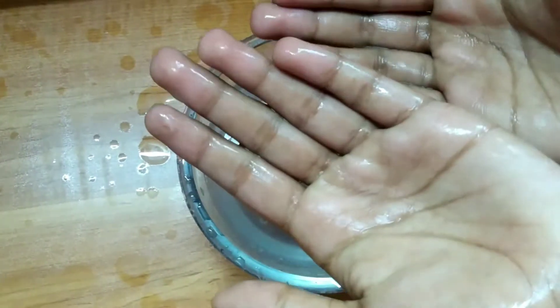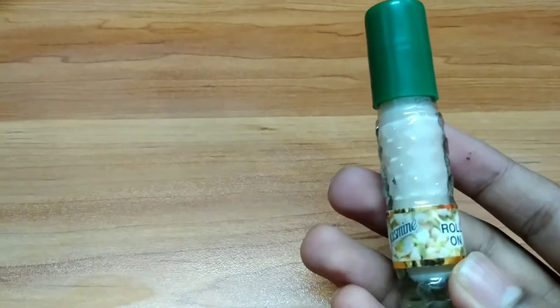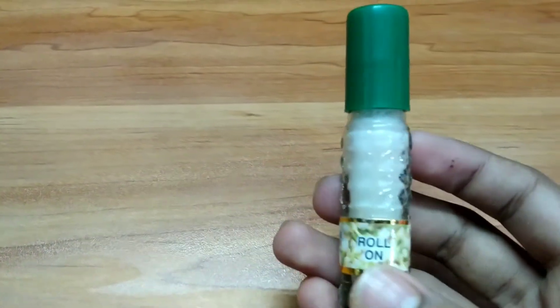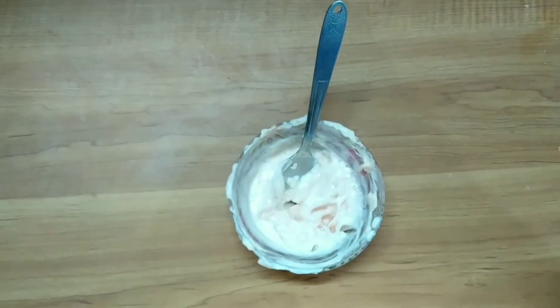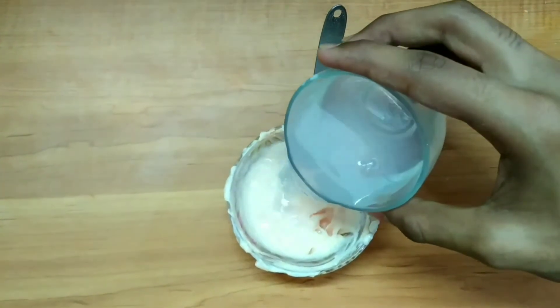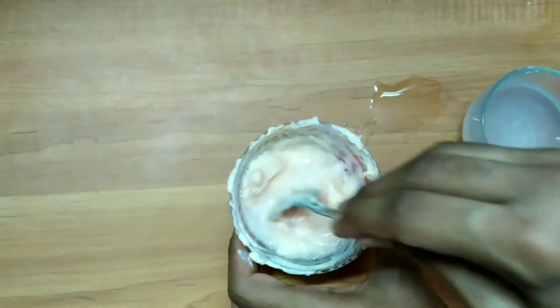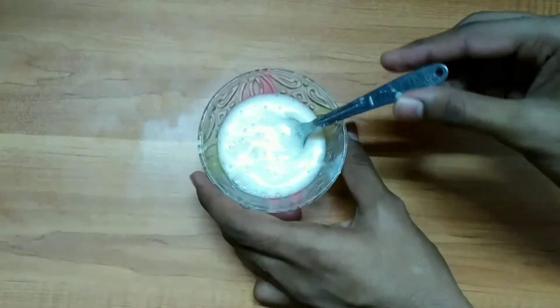See, the hands are neat now. So the second way to reuse old soaps is to make a roll-on liquid soap or you can simply call it a hand wash. For this, we use the same mixture which we used for paper soap. That is, grate soap and add lukewarm water. But now, we pour it into any old empty hand wash bottle or roll-on bottle.